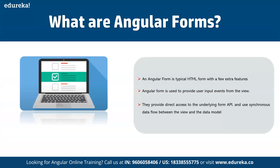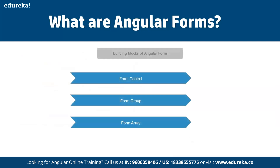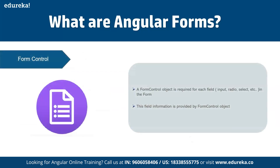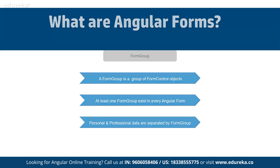What are Angular forms? An Angular form is a typical HTML form with a few extra features, which is used to provide user input from the view. It can be direct or indirect. For example, if you're going to create your Google account and provide information, you can store that data on the cloud or on-premises. There are three types of controls: form control, required for each input field; radio button for selections; and form group, which is a group of form control objects.